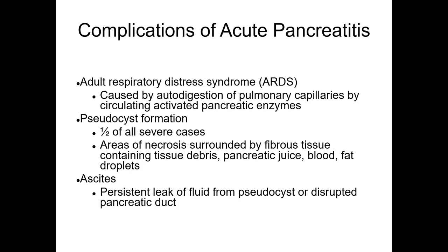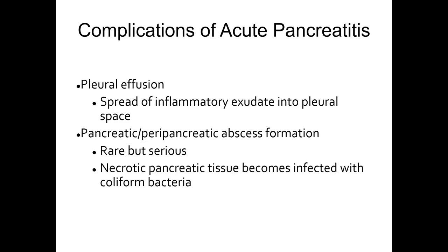Complications include adult respiratory distress syndrome, caused by auto-digestion of pulmonary capillaries by circulating activated pancreatic enzymes. Pseudocyst formation occurs in half of all severe cases. Ascites results from persistent fluid leak from a pseudocyst or disrupted pancreatic duct. Pleural effusion is the spread of inflammatory exudate into the pleural space. Pancreatic and peripancreatic abscess formation is rare but serious — necrotic pancreatic tissue that becomes infected with coliform bacteria.